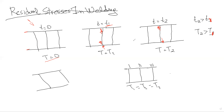From the previous example, we understand that because of the different heat treatment that the middle column undergoes, residual stresses will be created. At the end, we can see that we have tensile stresses in the middle and, for equilibrium reasons, compressive stresses in the outer columns.